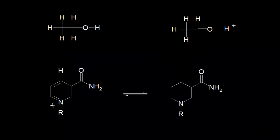In this video, we're going to look at the biological redox reactions of alcohols and phenols. Over here on the left, we have the ethanol molecule. This is our two-carbon alcohol. The carbon that we're most concerned with is this carbon right here, which has one bond to this oxygen atom.